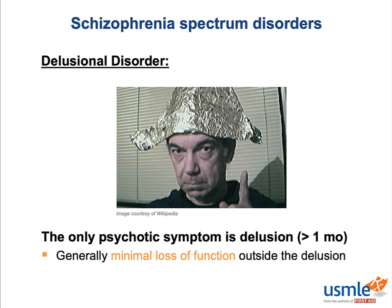Delusions can be shared if two people are very close, a phenomenon with the adorably French name of folie à deux. Keep in mind, there used to be a stipulation in the DSM-IV that delusional disorder had to include only non-bizarre delusions. That pretty arbitrary distinction between bizarre and non-bizarre no longer actually exists in the DSM-V, so that's no longer a deciding factor in this diagnosis.